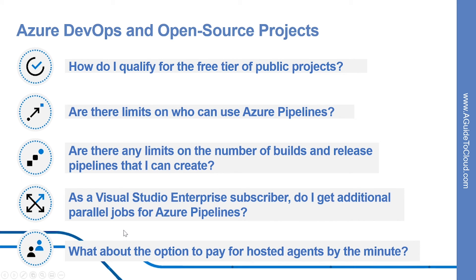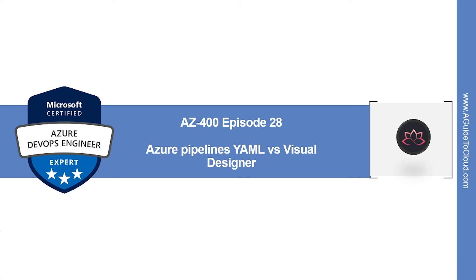Another question: what about the option to pay for hosted agents by the minute? Some of Microsoft's earlier customers are still on a per-minute plan for hosted agents. In this plan, you pay $0.05 per minute for the first 20 hours after the free tier, and $0.01 per minute after 20 hours. Because of the limitations in this plan, you might want to consider moving to the parallel job model. That concludes this lesson.